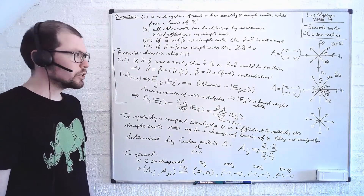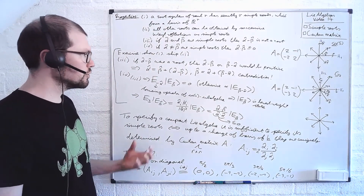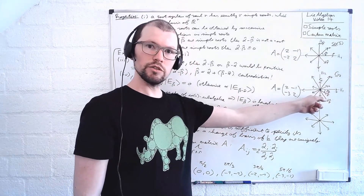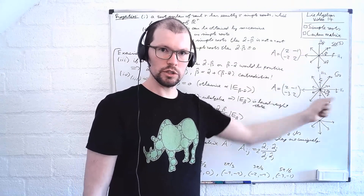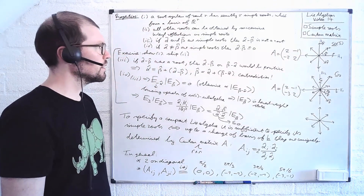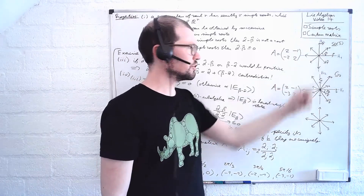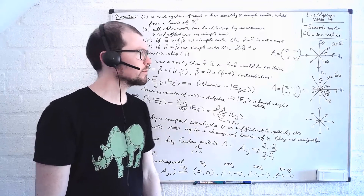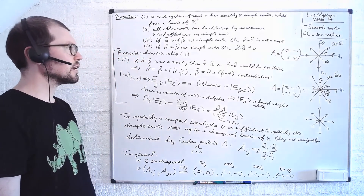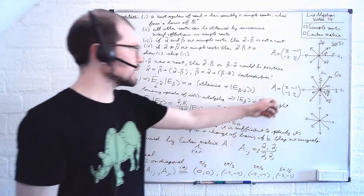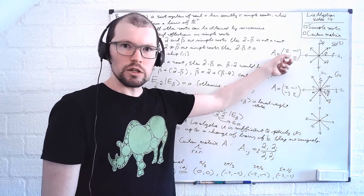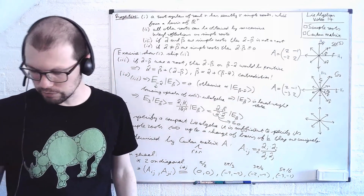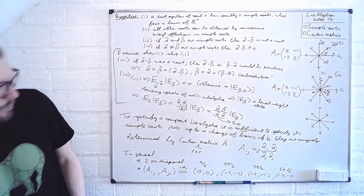Next week we're going to use some of this structure in the case of SU(3), which is also a rank-2 Lie algebra. We'll draw the corresponding root diagram and see how knowing about these roots helps us determine the representations of SU(3). Then in the last week, we're going to classify all possible Cartan matrices to see what compact Lie algebras one can get.